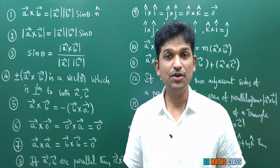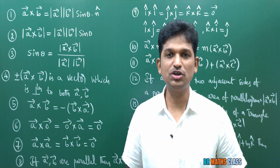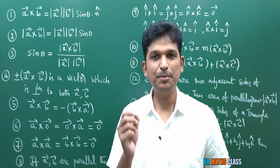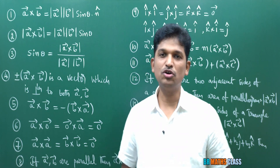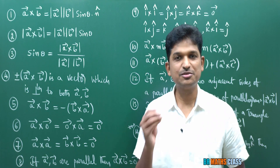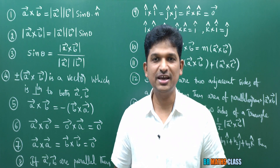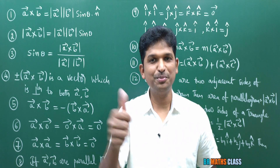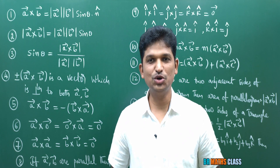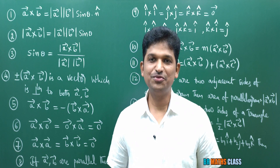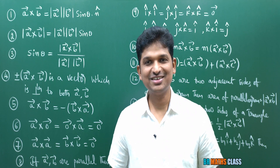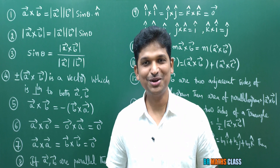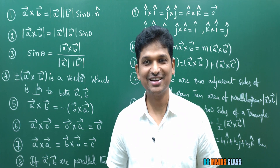So in total we have 14 formulas in cross product of vectors. If you are thorough in all 14 formulas you can do these exercise problems very easily. Take pen and paper, write all 14 formulas one after another, spend 15 to 20 minutes — then you can learn all these formulas very easily. If you liked this video please drop a like and share with your friends. If you are not yet subscribed to my channel, subscribe now. Thanks for watching, take care, bye.